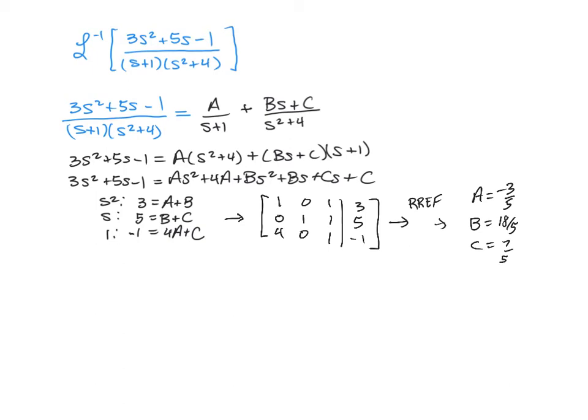So we go back to our original problem, and we are now taking the inverse of negative 3 fifths, which is our A, over s plus 1.